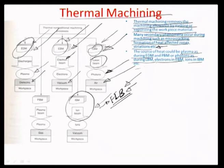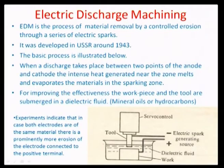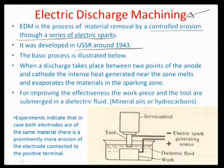Let us look at electric discharge machining — EDM — which was developed in USSR around 1943. It is a process of material removal by controlled erosion through a series of electric sparks. It involves very brief discharges of electrons at a single tip; several such discharges happen wherever the breakdown field of the medium is exceeded by the external electric field, and there is always a removal of material owing to that.